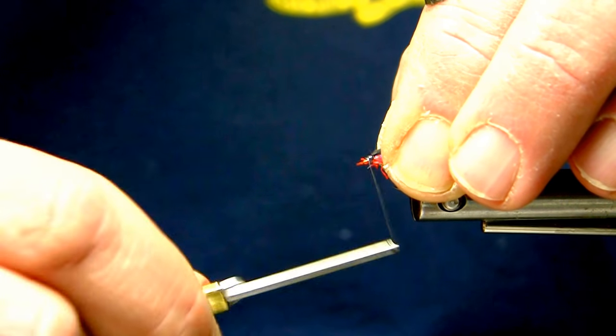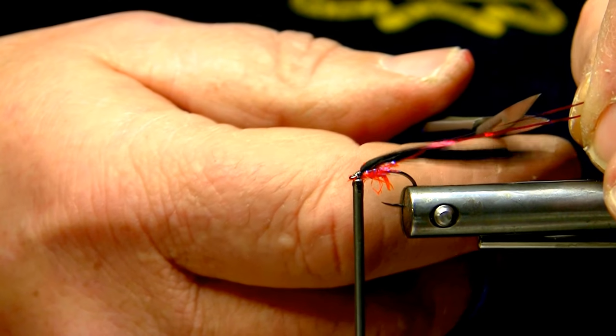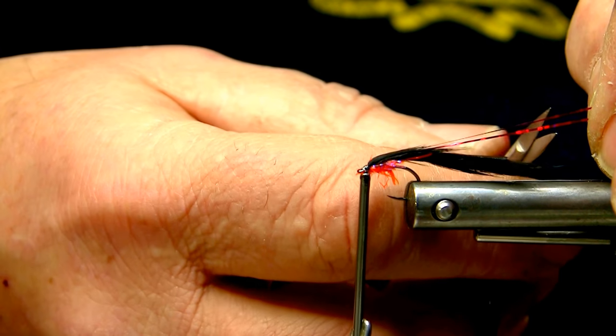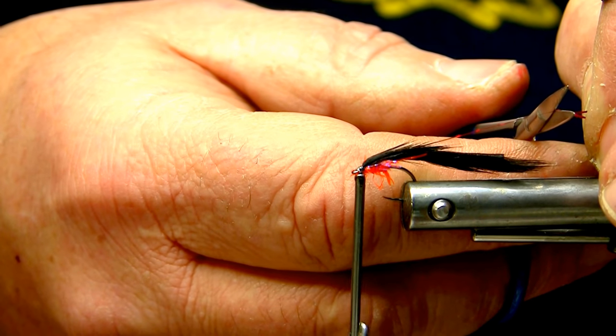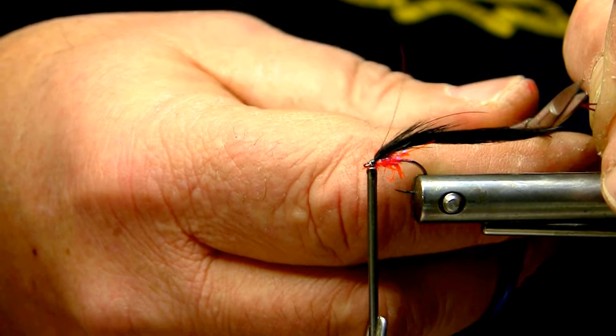And this generally just keeps the pattern nice and slender still and keeps the flash on top. You can put it on the sides if you choose, but I find this works just as well, having it on top. So I cut the flashaboo just slightly longer than the wing length.